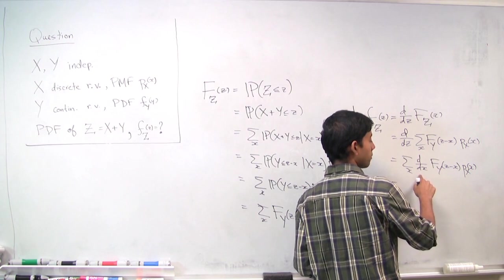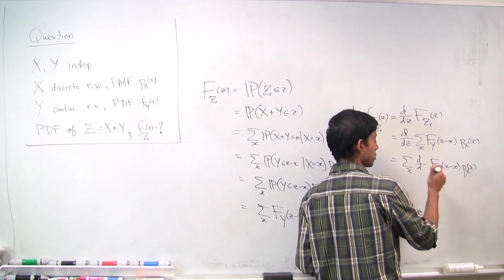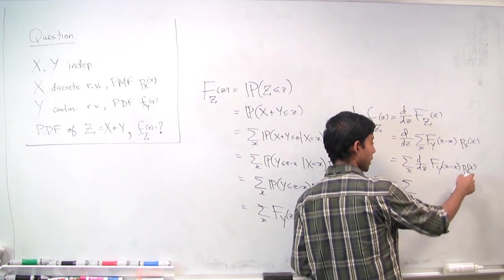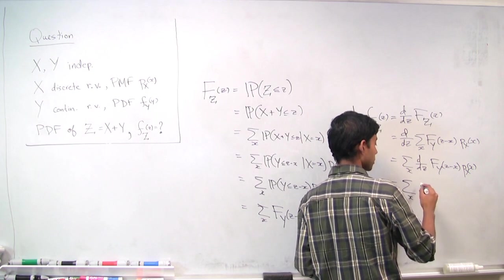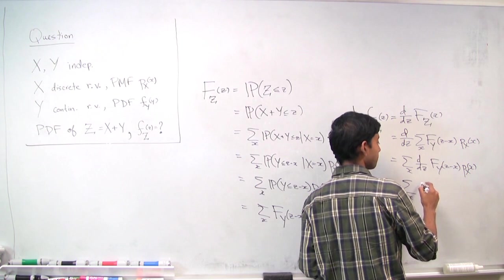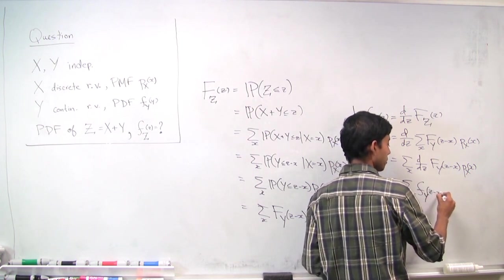So here, the derivative with respect to z—this is actually z—you use the chain rule here. p_x doesn't matter because it's not a function of z. So we have f_y evaluated at z minus x according to the chain rule.